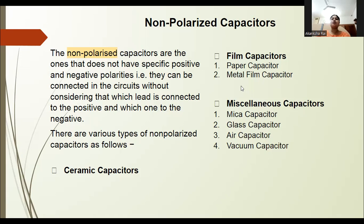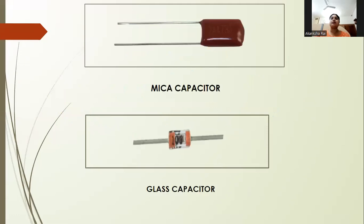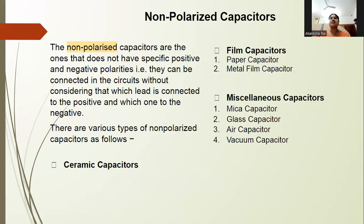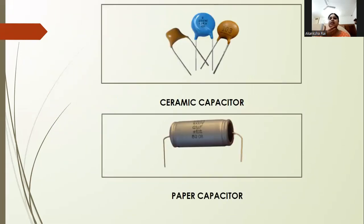So here we have types of non-polarized capacitors. The first category is ceramic capacitors. What happens with ceramic? Ceramic is one of the materials that is very much used in basic electronics, especially in capacitors.